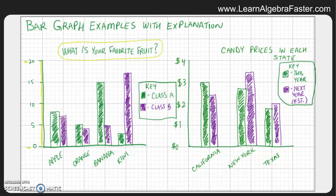Now let's look at the horizontal axis, which is the one going left and right on the bottom. This is where we usually see our groups or categories of what we're measuring. In this case, it's easy to see — we kind of figured this out from the title — that the groups are different types of fruit: apple, orange, banana, and kiwi.